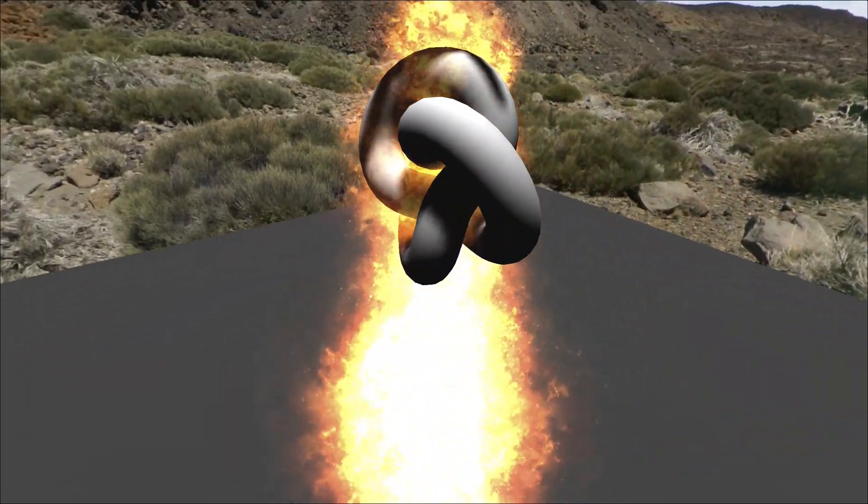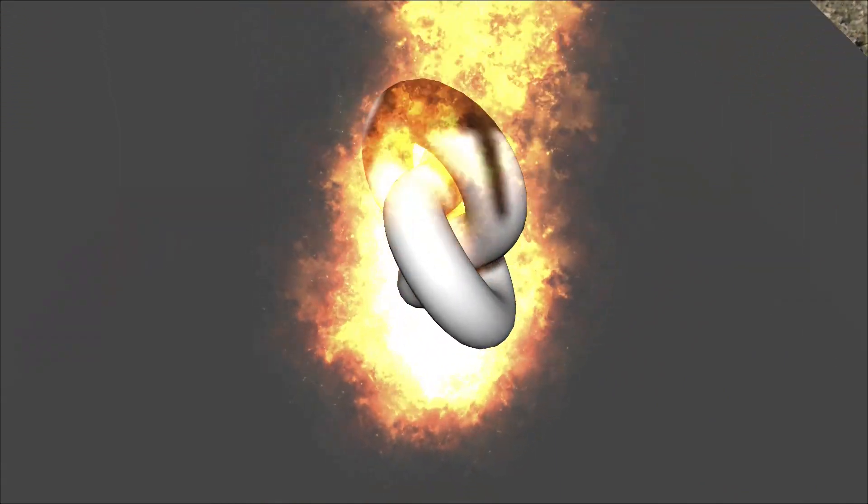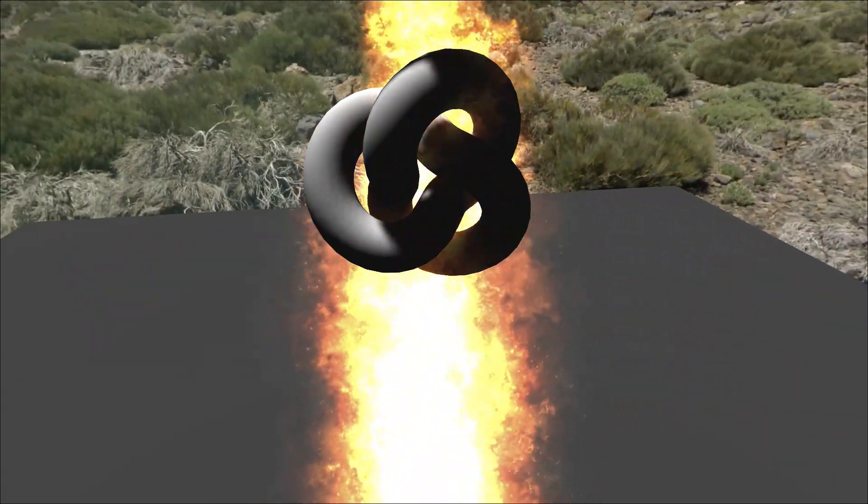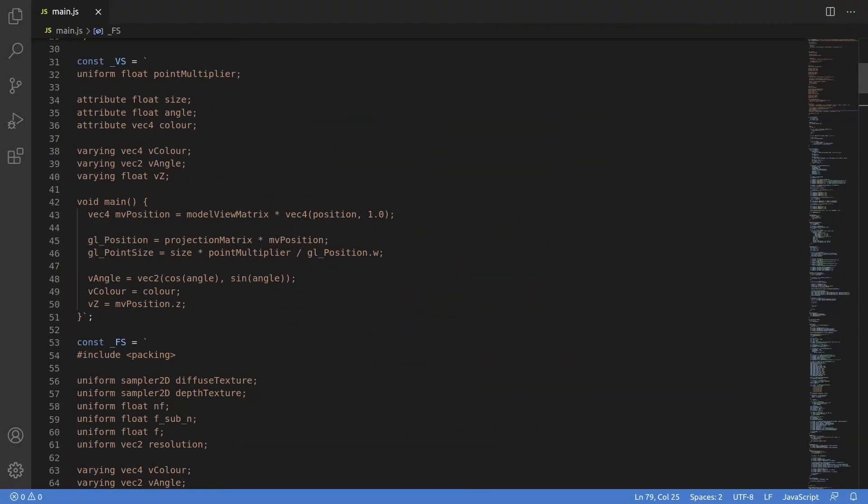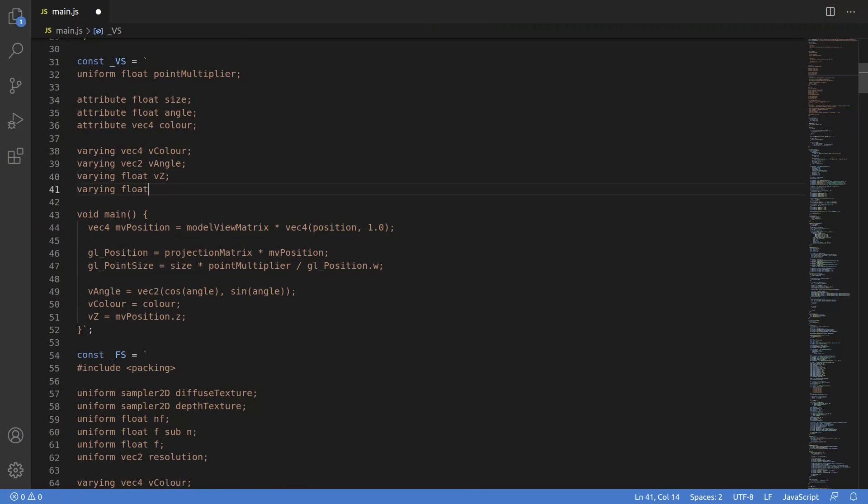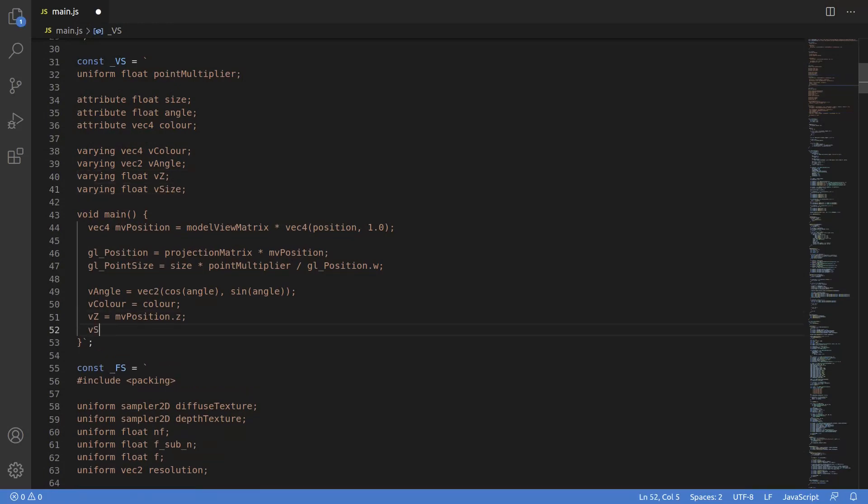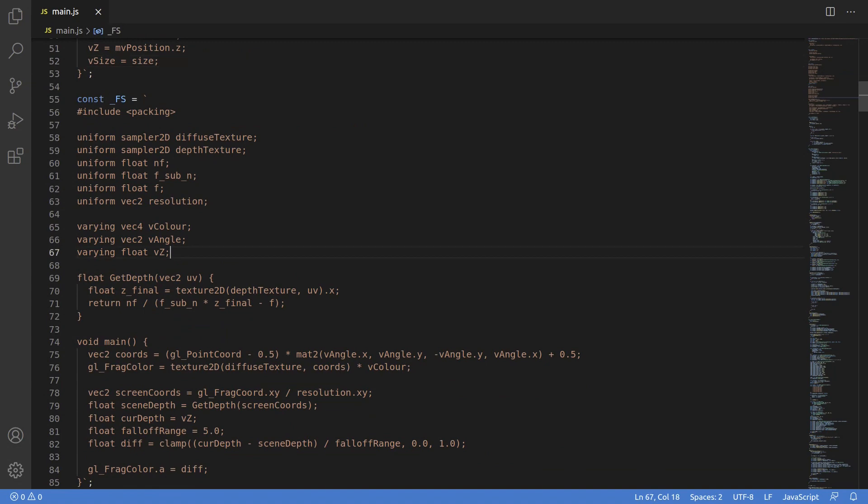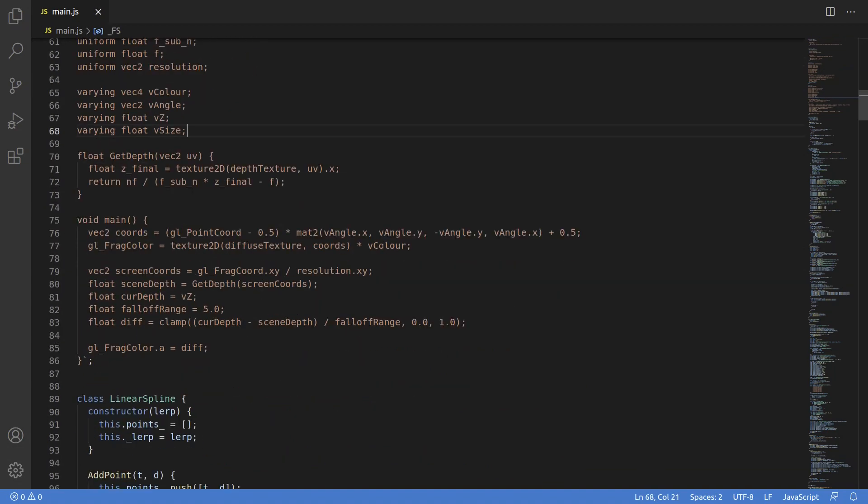The point is that you'll need some sort of falloff that is right for the size of each individual particle. In our case, I can actually just bring the size of the particle down from the vertex shader. I've declared a varying in the vertex and fragment shaders, and we're passing in the particle size. Now, if I use that as part of the falloff calculation, it won't matter how big or small the particles are.